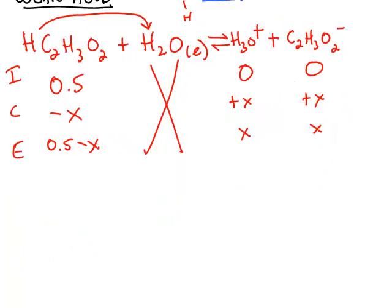And now to solve this ICE chart for x, we need to know the Ka. And that would be products divided by reactants.